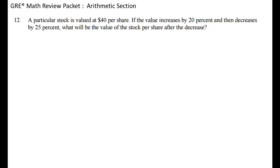A particular stock is valued at $40 per share. If the value increases by 20%, stop right there. What does it mean for something to increase by 20%? It means that you need to multiply it by 1.2. Why 1.2? Well, if it's going to increase, that means you have 100% of it, and then you add on another 20% of it. 100% is 1, and 20% as a decimal is 0.2. So if you want 120% of something, you would be multiplying by 1.2.